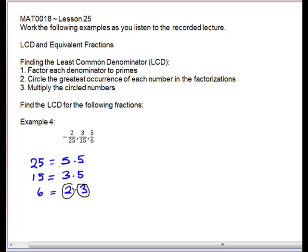And the 5's will come from the 25. This one has 2, and 15 only has 1. So now we have 2 times 3 times 5 times 5. Or if we multiply those, we have 25 times 6, which will give us 150. This is our least common denominator.